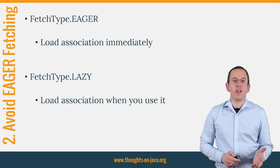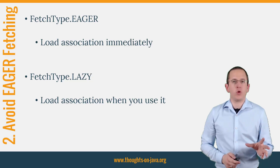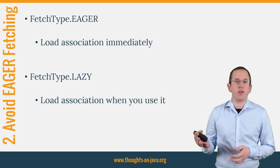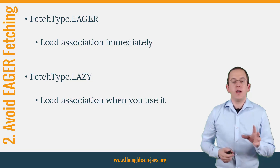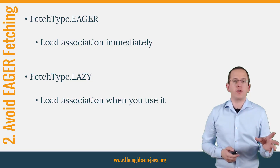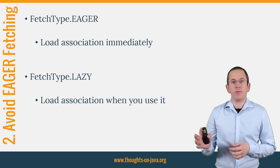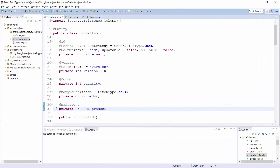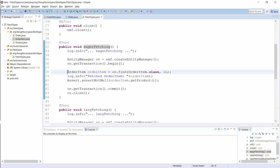Tip number 2: avoid eager fetching. From a performance point of view, choosing the right fetch types for your entity associations is one of the most important steps. The fetch type defines when Hibernate performs additional queries to initialize an association. It can either use fetch type eager to fetch the association when it loads the entity, or use fetch type lazy and delay the additional queries until you use the association. Fetch type eager tells Hibernate to get all elements of a relationship when selecting the root entity. This is the default for to-one relationships — I use it for the many-to-one relationship between the order item and the product entity. When I fetch an order item entity from the database, Hibernate will also get the related product entity.